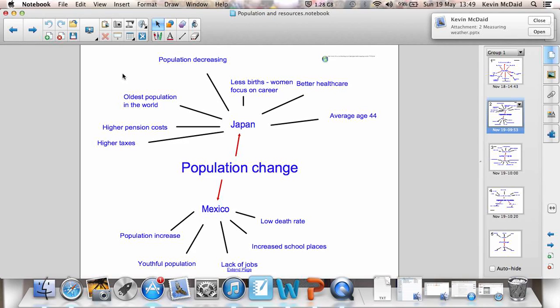The oldest population in the world. This means things like higher pension costs, higher taxes, more money spent on medical care and nursing. And overall, the population is decreasing. Because the average age of Japanese is quite old, they're not having any more kids. There's less births. Women focus on their career, so they have babies a lot later in life, as is the same here in Britain and most other MEDCs.